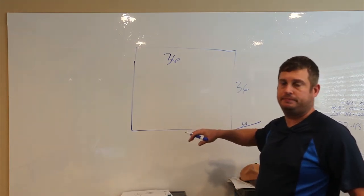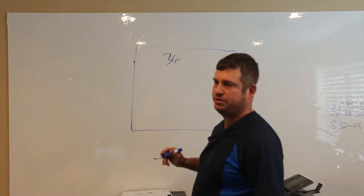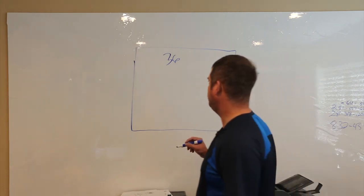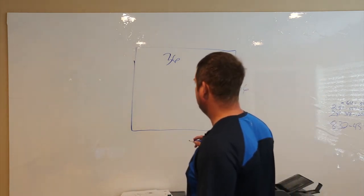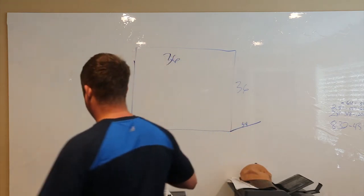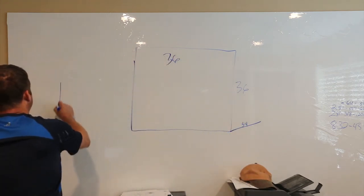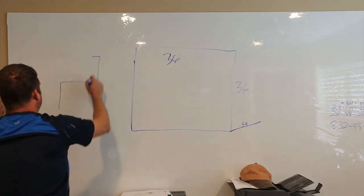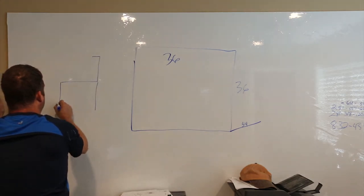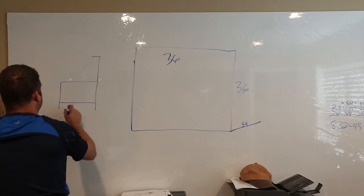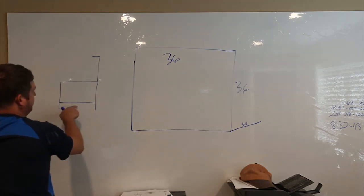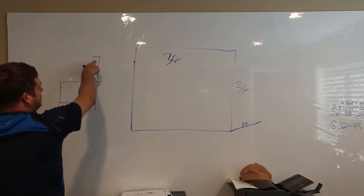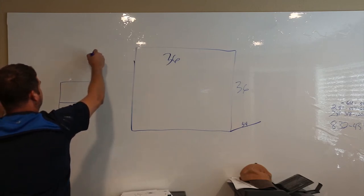If I was to draw a side view, my table would look something like this. I would have a shelf here, a surface here, and another shelf up above.